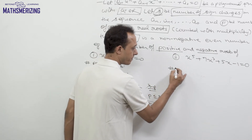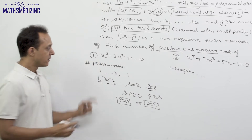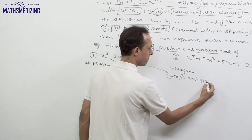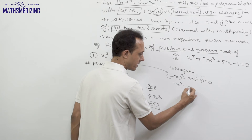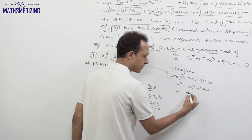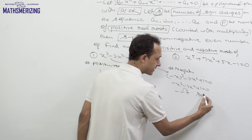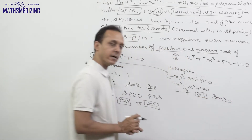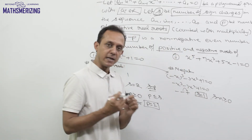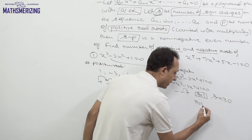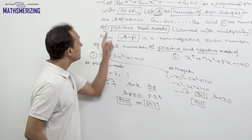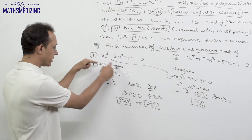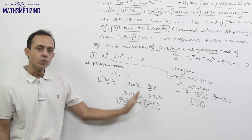Now for negative real roots, we replace x with minus x. Substituting gives -x³ - 3x² + 1 = 0, so the signs are minus, minus, plus. There is only one sign change, so s = 1. Since s minus n must be a non-negative even number, the only possibility is n = 1. So this equation has exactly one negative real root.